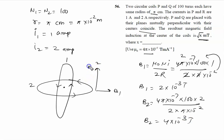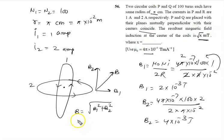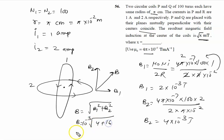Now B1 and B2 are known. Since both B1 and B2 are perpendicular to each other, the resultant is found using Pythagoras: B = √(B1² + B2²). So B = √[(2 × 10⁻³)² + (4 × 10⁻³)²]. Taking 10⁻³ outside: √(4 + 16) × 10⁻³ = √20 × 10⁻³ tesla, which equals √20 milli-tesla.